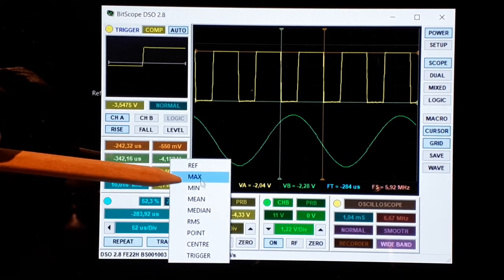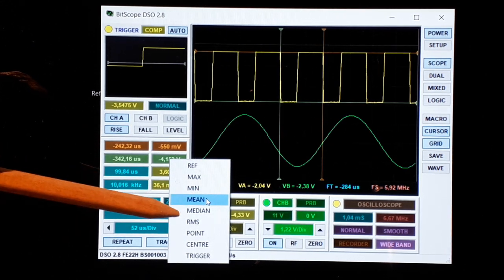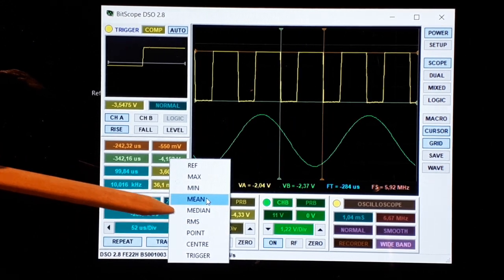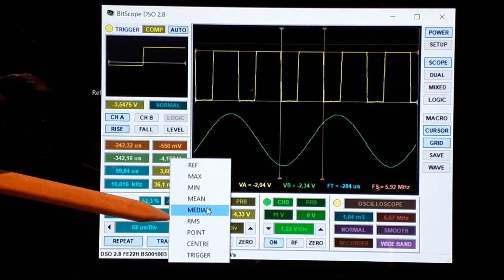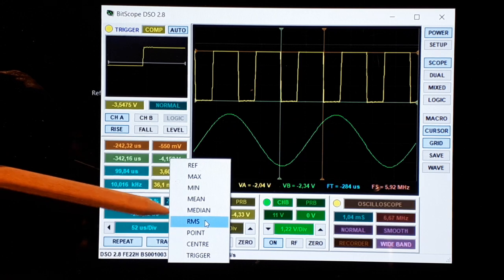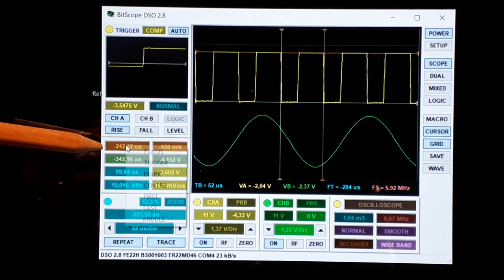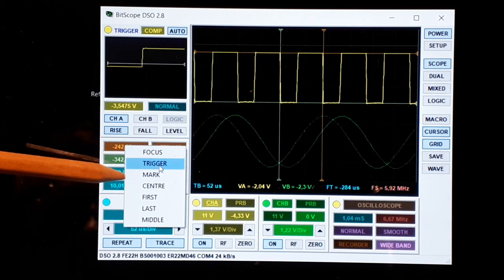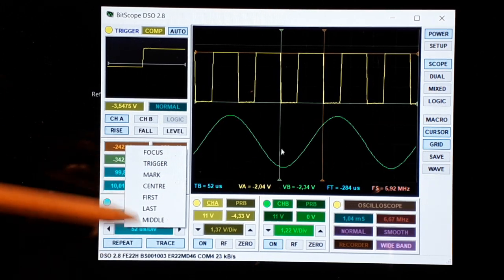Or the minimum value so it will track it, or the mean that is the average voltage, or the median that is the midpoint between the maximum the mean or the RMS. And in this case we have also we could follow the trigger point or others you see here.